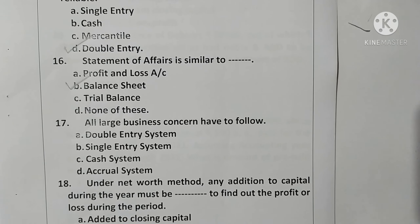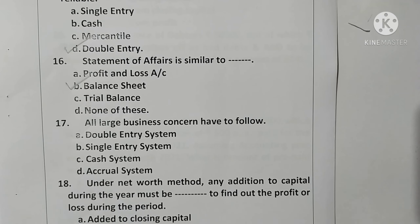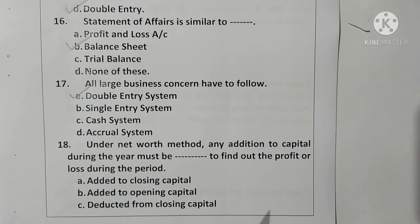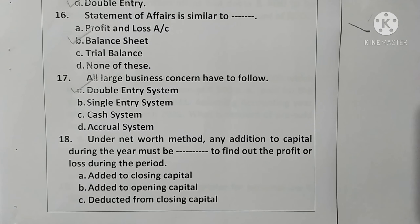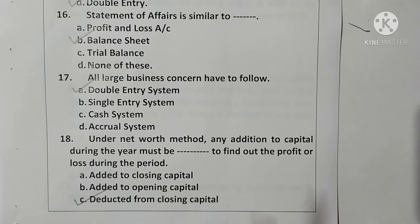Question 17/18: All large business concerns have to follow the double entry system. Option A is correct. Question 18 (net worth method): Any addition to capital during the year must be deducted from closing capital to find out the profit or loss during the year. Option C is correct.